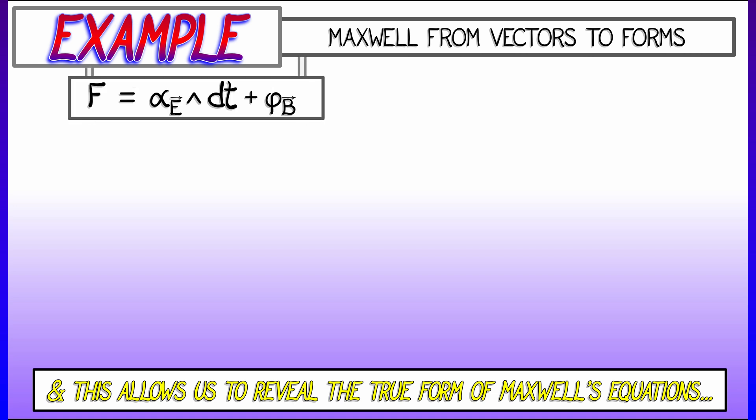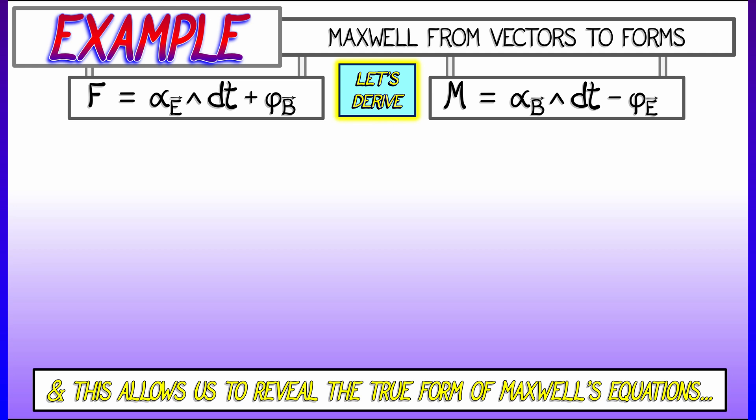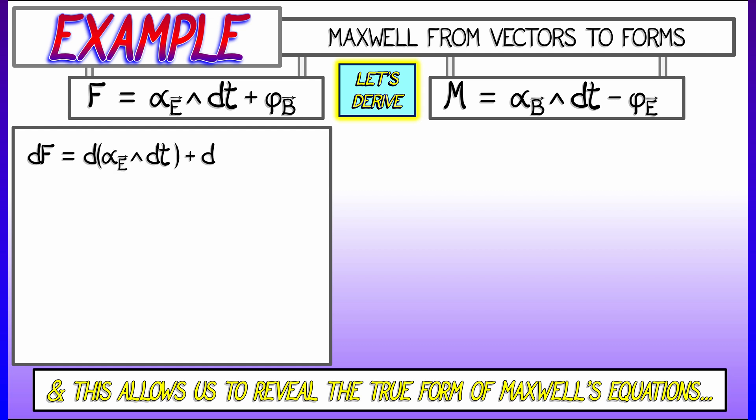Let's consider the Faraday to form f and the Maxwell to form m. And let's do some derivations. In particular, let's compute their derivatives. Let's compute the derivative of f. Well, f has these two terms, so I need to distribute the differentiation operator across these two terms. I get d of alpha e wedge dt plus d of phi sub b. Now, that first term being a wedge product, I can distribute differentiation across that. I get d of alpha e wedge dt plus alpha e wedge d of dt.